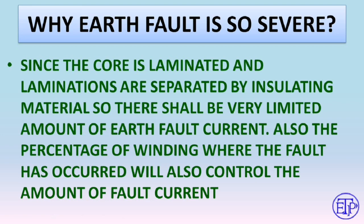Due to the high resistance, the earth fault current will be very low. However, the percentage of winding where the fault has occurred plays an important role. If the fault occurs at 100% of the winding, 100% voltage delivers the fault current. But if it occurs at 10% of the winding, only 10% voltage drives the fault current, making the earth fault current very low.